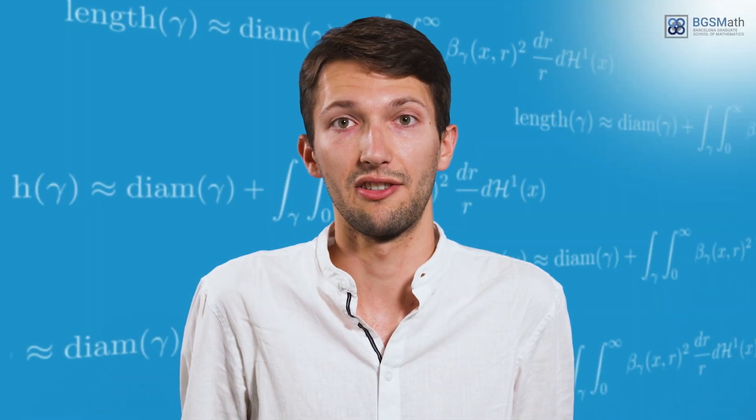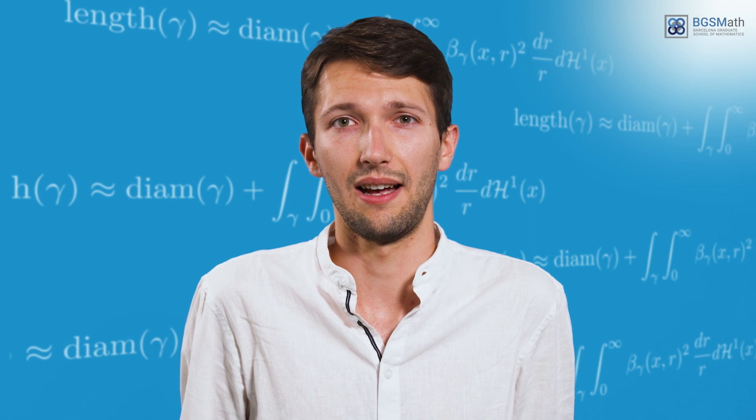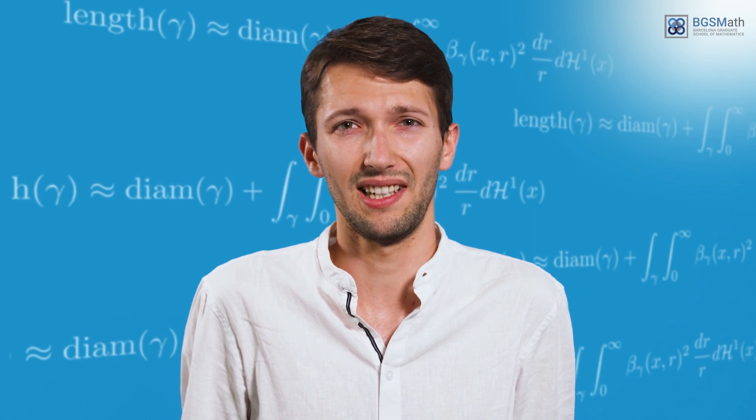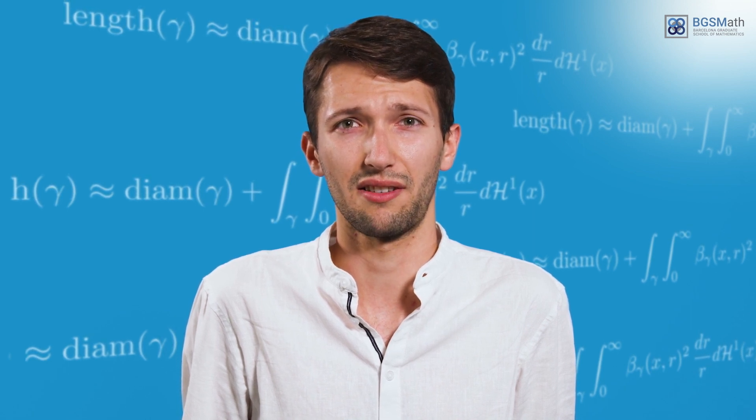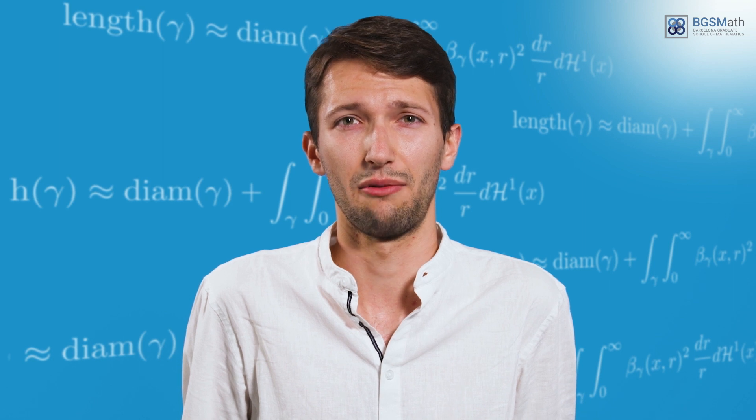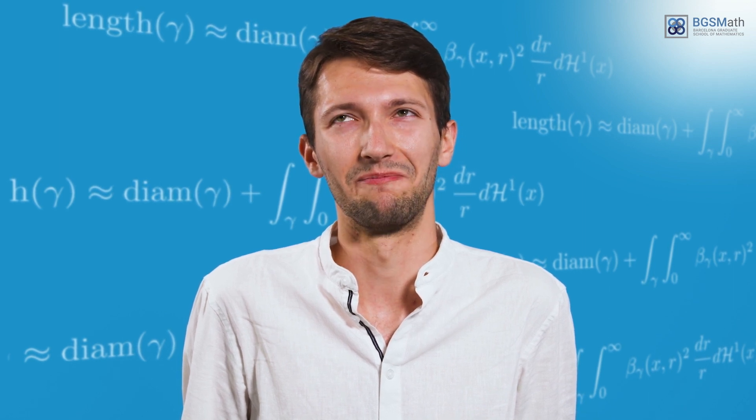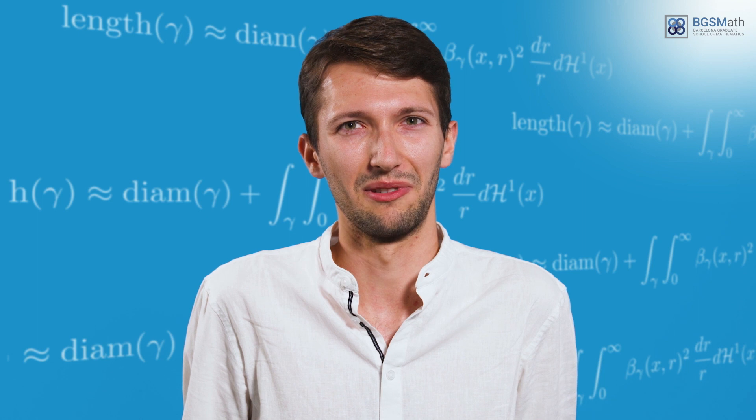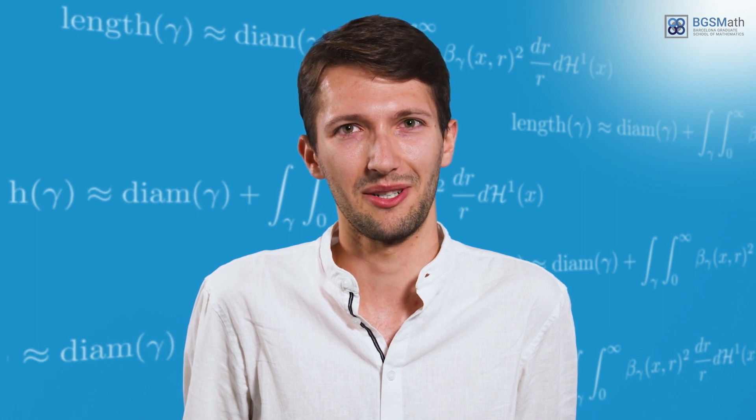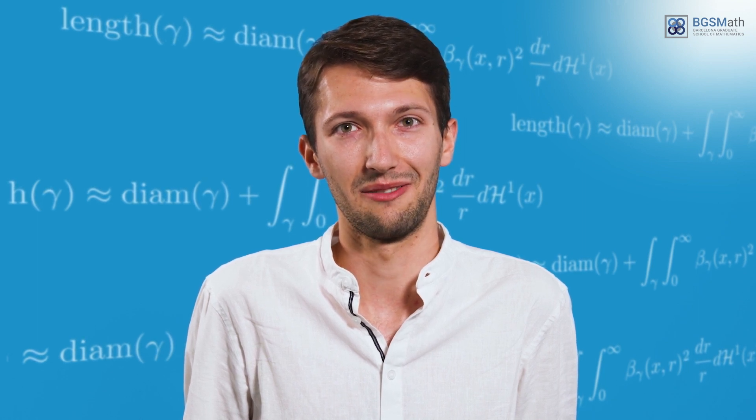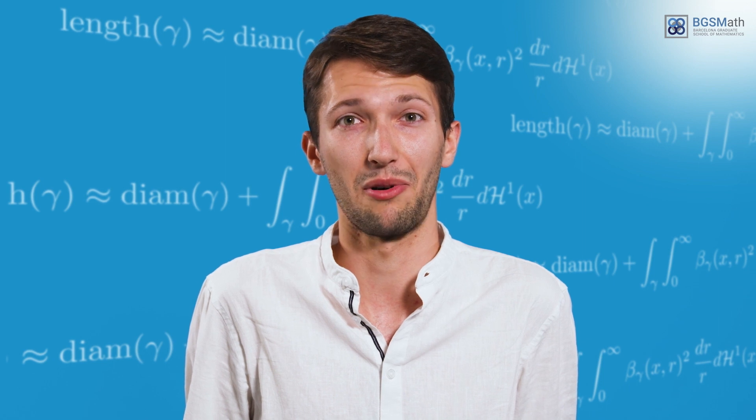What is geometric measure theory? It's a study of mathematical objects called measures. What are measures? It's easier to give examples. So an example of a measure is a counting measure, which just tells you how many points you have.